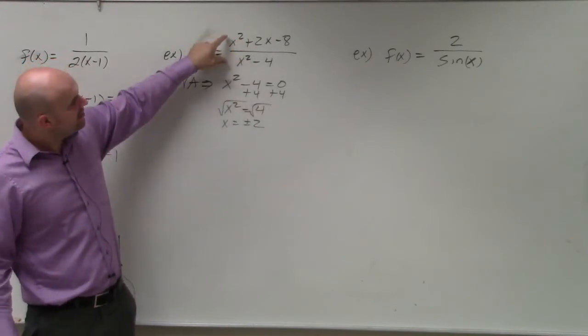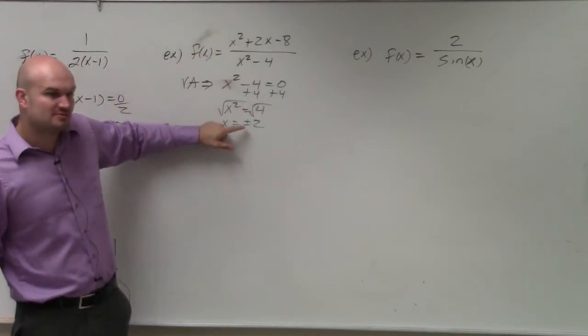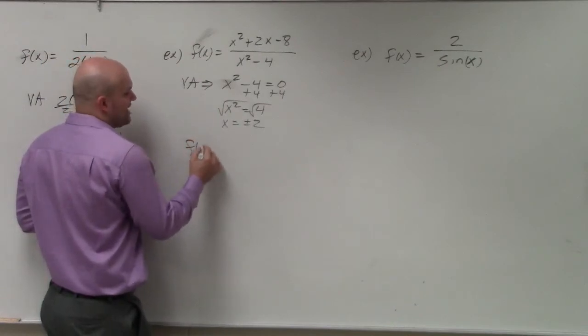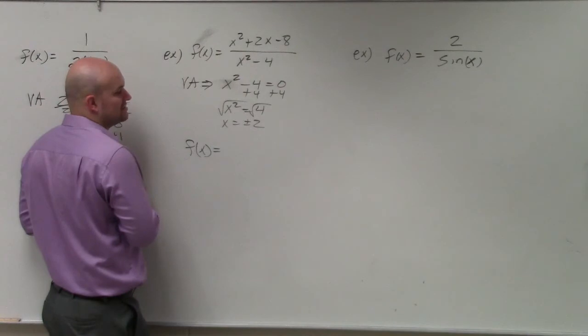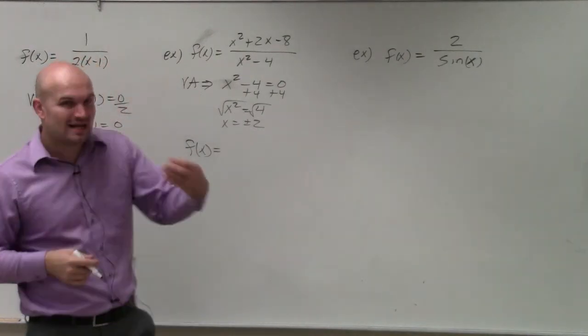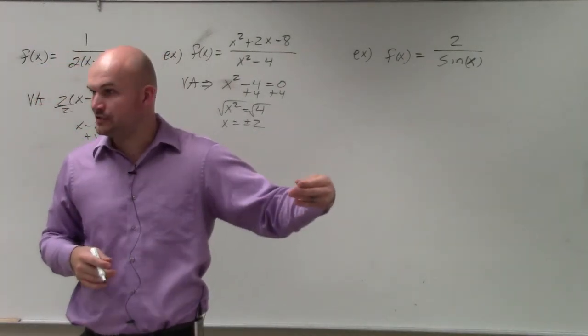However, I'm not sure if these are both the asymptotes or not. So what I'm going to do is I'm going to factor my expression out. I'm going to factor the numerator and factor the denominator. Because remember, vertical asymptotes are non-removable discontinuities.